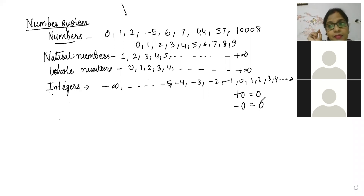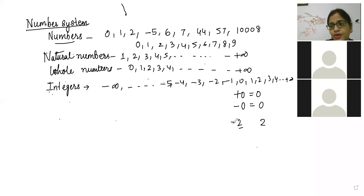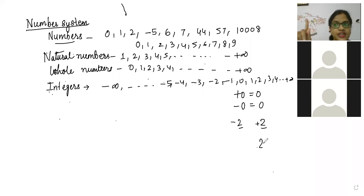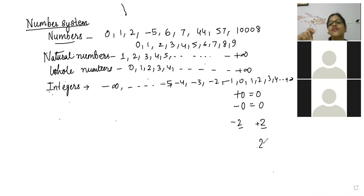If I say minus two and plus two — this two is a digit, and in front of digit two, one operation is there that is negative, and in front of digit two one operation is there that is positive. In front of two if we put a positive operation, two becomes a positive number. If we put negative operation, two becomes negative.